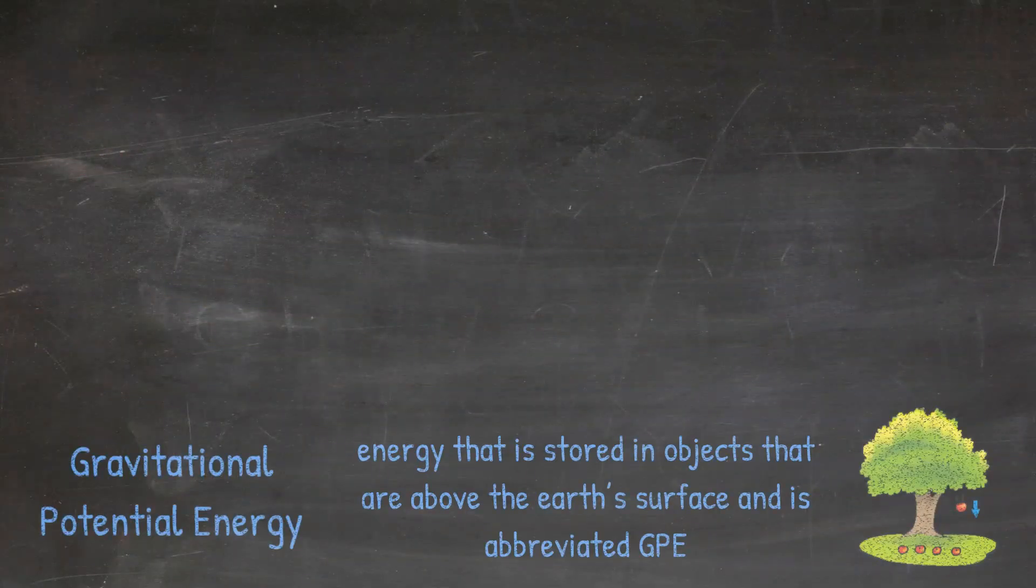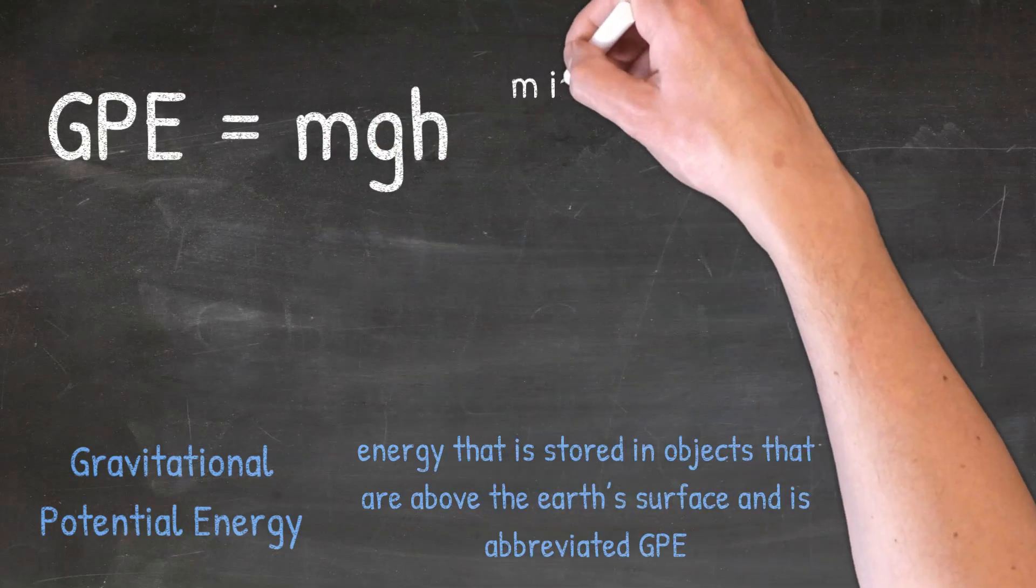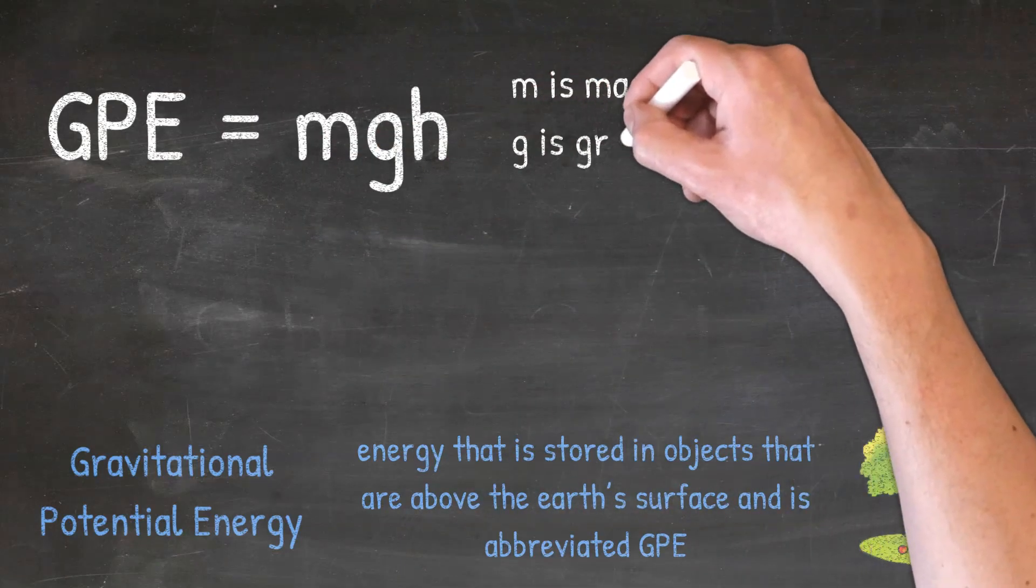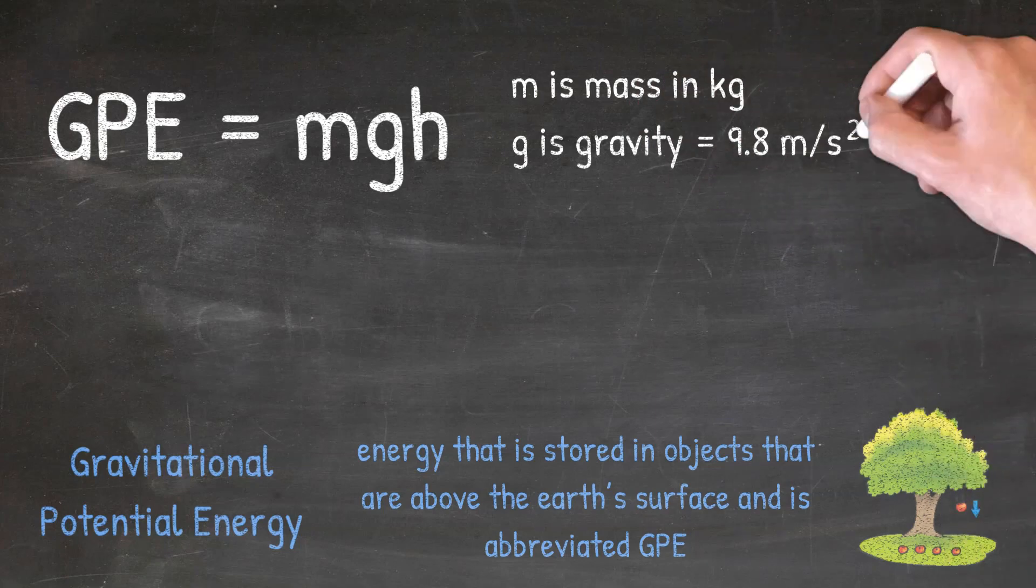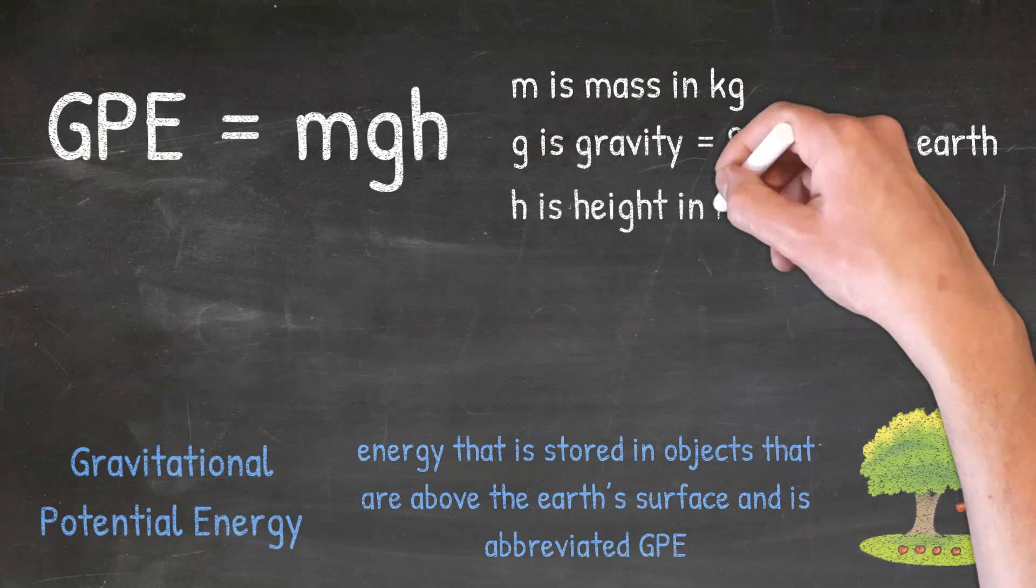We can solve for gravitational potential energy using the formula GPE equals MGH, where M is mass in kilograms, G is gravity, or the acceleration due to gravity, which is always 9.8 meters per second squared on Earth, and H is the height in meters.